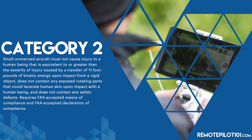Now, things start to get a little bit weird when we get into Category 2. Ready? The small unmanned aircraft must not cause injury to a human being that is equivalent to or greater than the severity of injury caused by a transfer of 11 foot-pounds of kinetic energy upon impact from a rigid object. It does not contain exposed rotating parts that could lacerate human skin upon contact, and contains no safety defects. It requires an FAA-accepted means of compliance and declaration of compliance. Can we cue the cricket sound? Like, what is 11 foot-pounds of kinetic energy? Should I get my E6B flight computer out? How do I calculate such a thing?